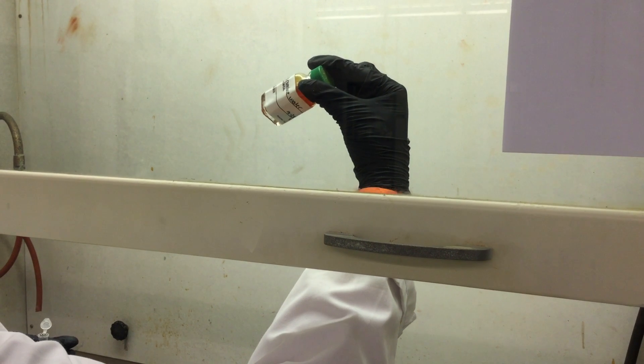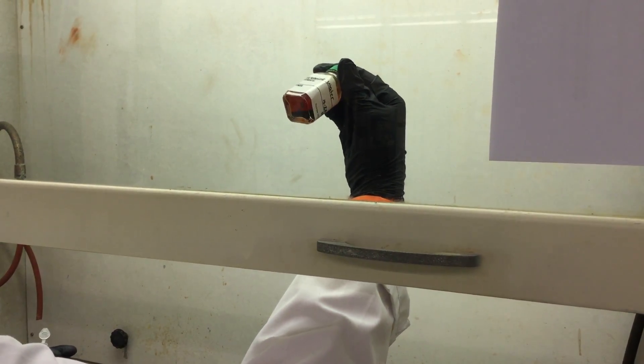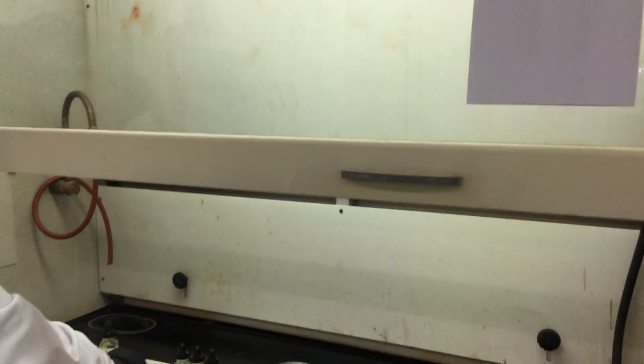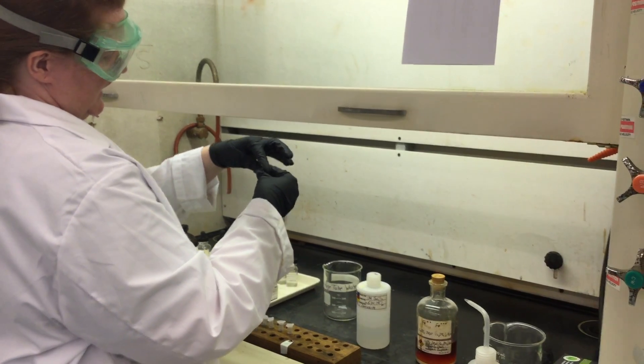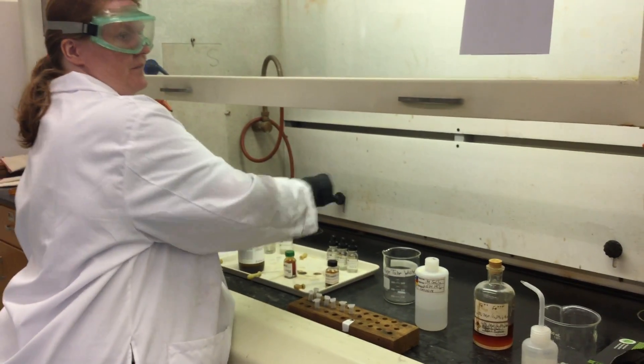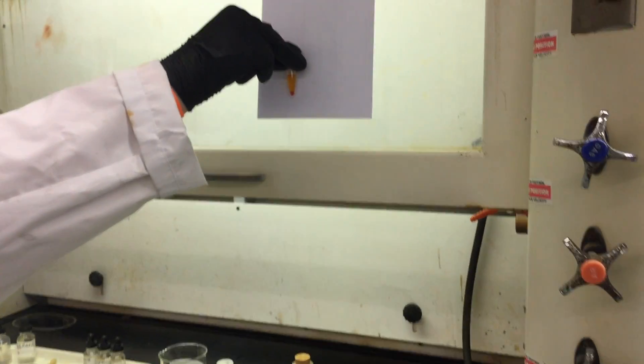So I've put a little bit of bromine in the aqueous layer, and I'm going to mix them. Again, we're looking at the bottom, we're looking at the organic layer, so you want to make an observation about what color that looks like.